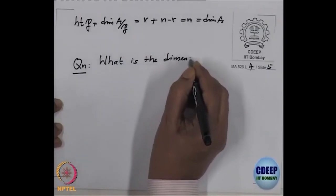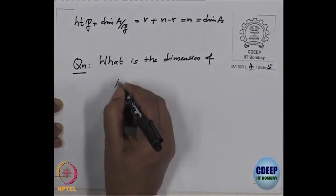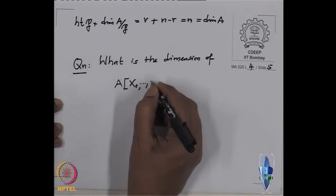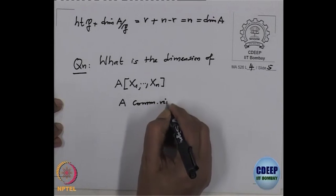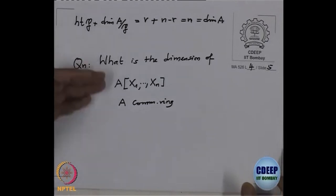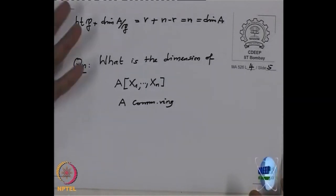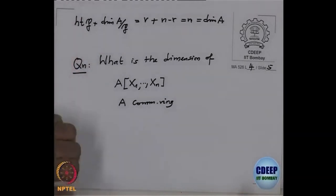I want to generalize this theorem to arbitrary commutative ring, if possible. So I want to prove — now the base ring may not be a field. The question is: what is the dimension of a polynomial ring in n variables over an arbitrary commutative ring? Obviously, we cannot apply the normalization lemma or related techniques because we do not have a field, we do not have a finite type K-algebra, we do not have a transcendence degree and so on. So I will do it for one variable first — the polynomial ring in one variable over a commutative ring.